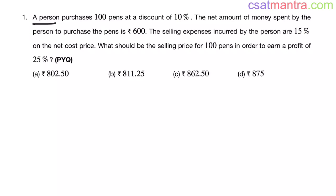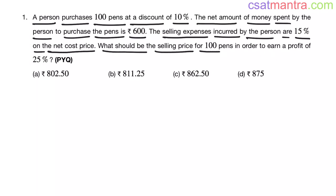A person purchases 100 pens at a discount of 10%. The net amount of money spent by the person to purchase the pens is 600 rupees. The selling expenses incurred by the person are 15% on the net cost price. What should be the selling price for 100 pens in order to earn a profit of 25%?